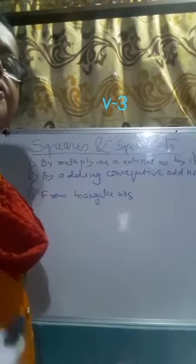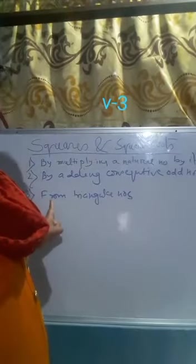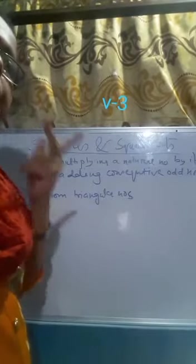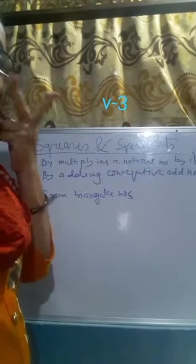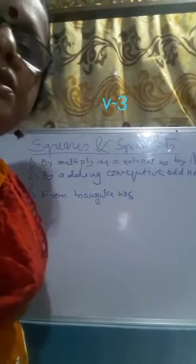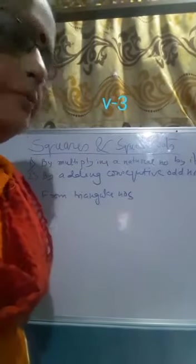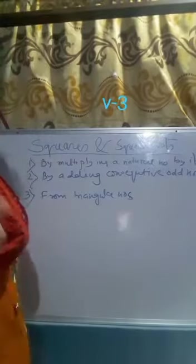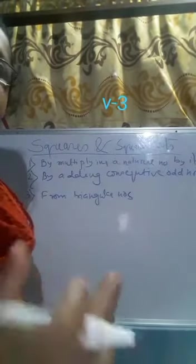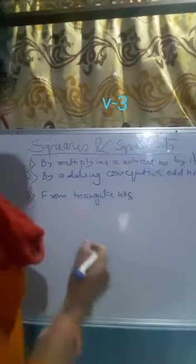In the third technique, from triangular numbers we can get the square numbers. First of all, we must know what a triangular number is. A number in the form of a triangle is called a triangular number.